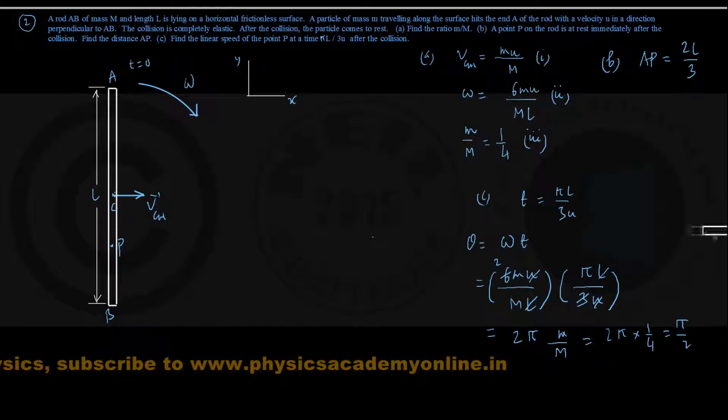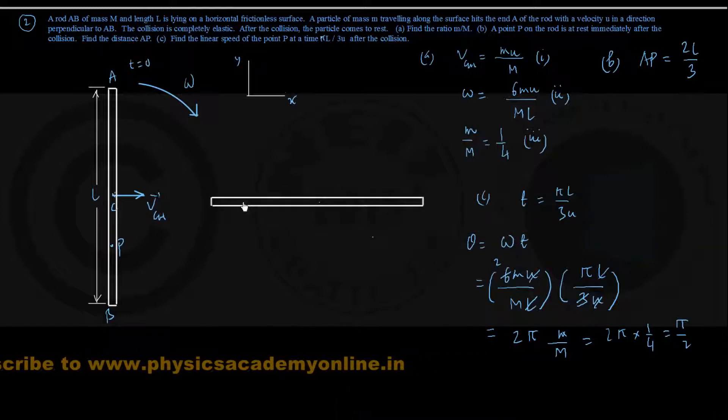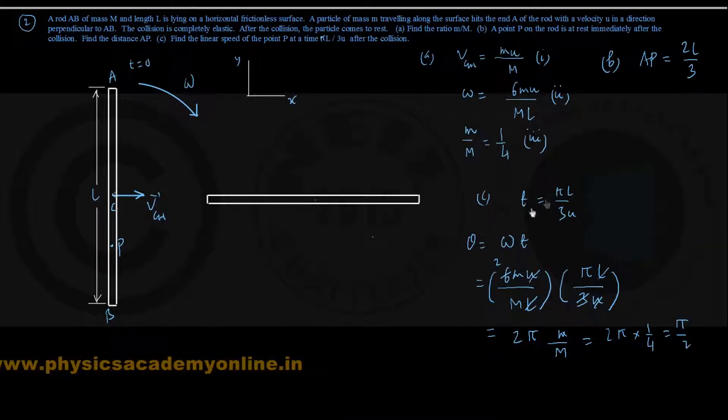Simultaneously a rotational motion has taken place, and in the given time t equals πL by 3u, this rod must have rotated clockwise through an angle of π by 2, that is 90 degrees. This is the position of the rod now, at this time.